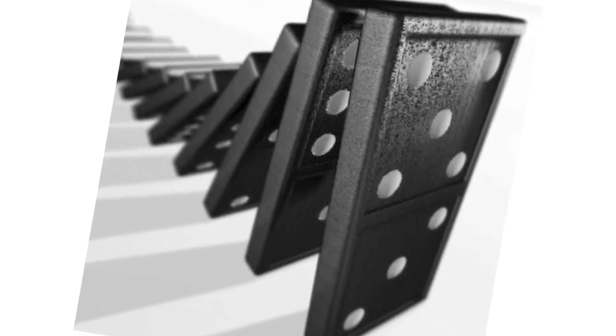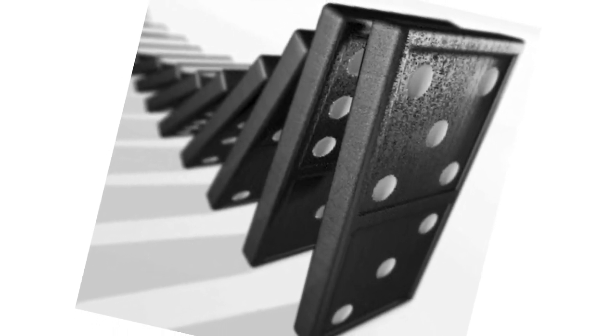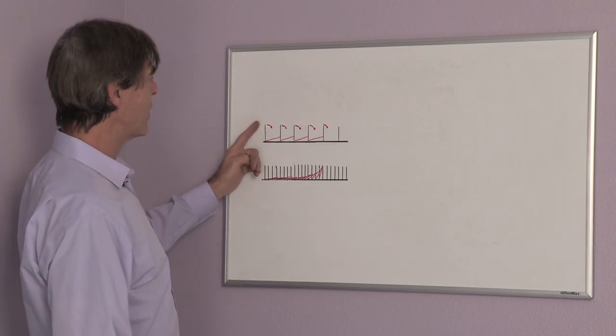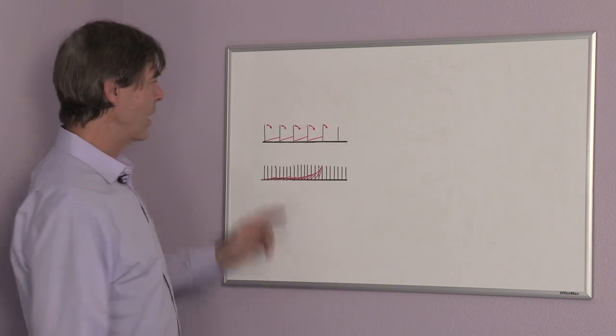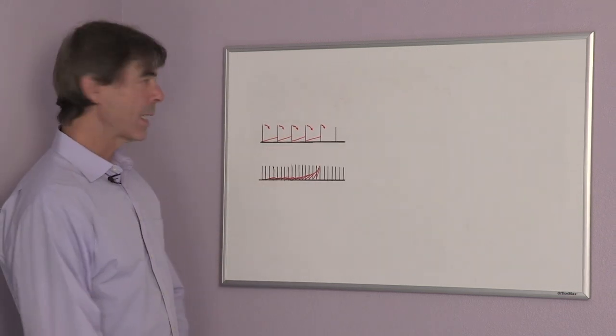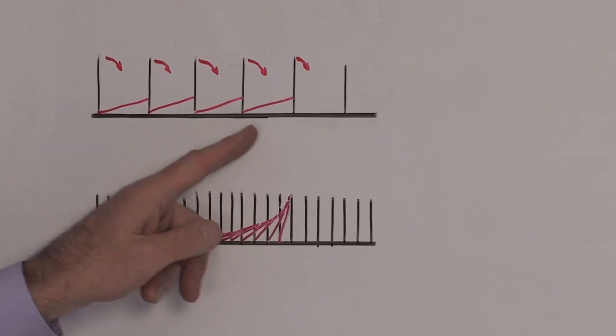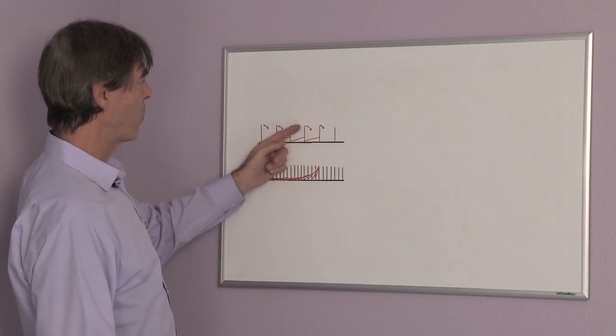Let's suppose we set up our dominoes at the maximum distance apart so they just barely hit each other and knock each other over. By the time you get to the fifth domino, it's going to be hit by one domino before it.